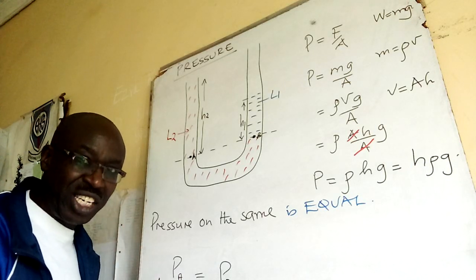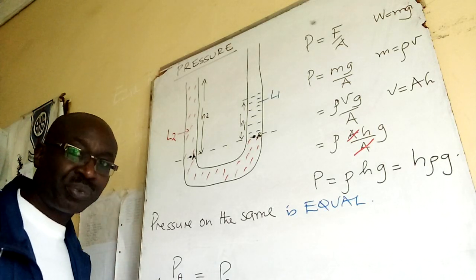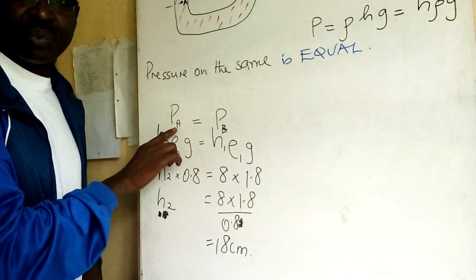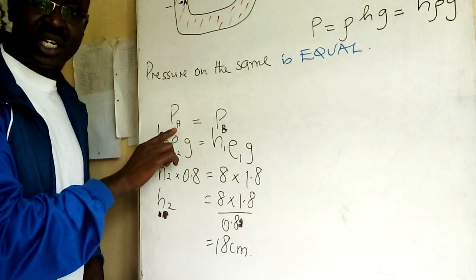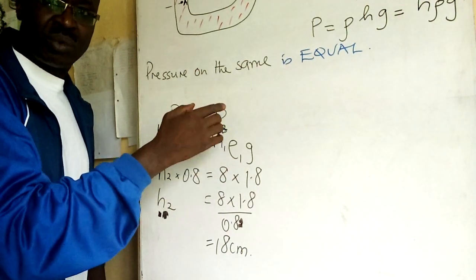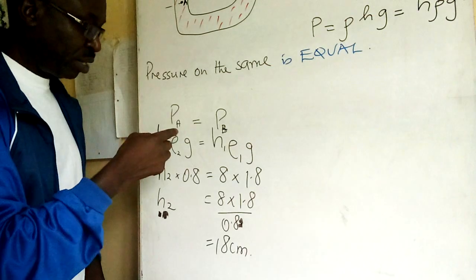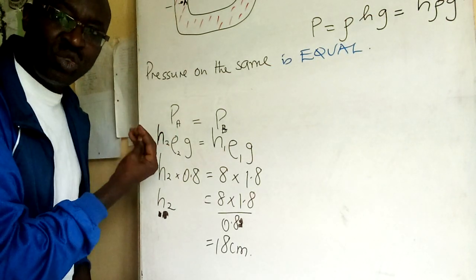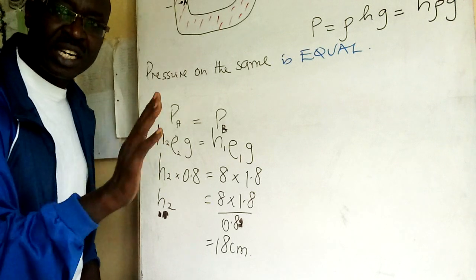But if you want to maintain it, I have no problem. Now we calm down, we focus. Pressure A is equal to pressure B. Pressure B is on the right hand side, pressure A is on the left hand side, so that you can pick the units and the letters accordingly.